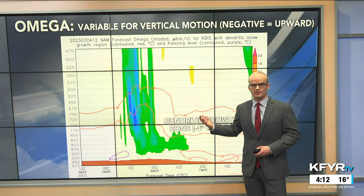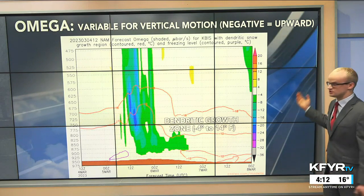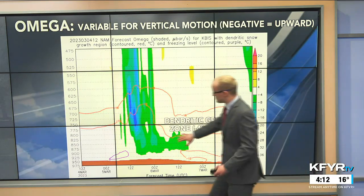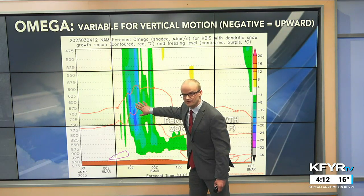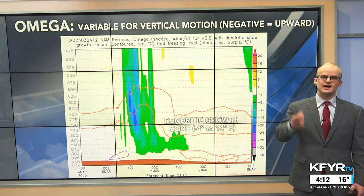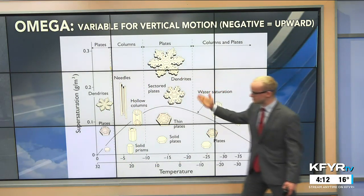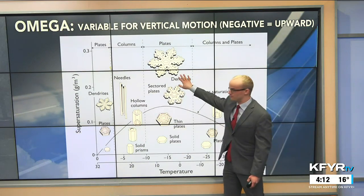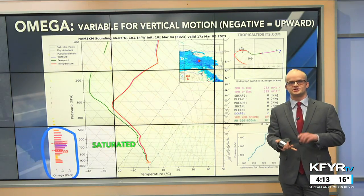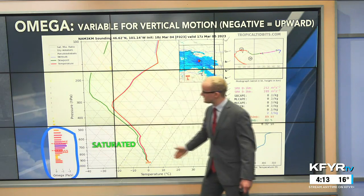Here's another model parameter called Omega, which we look at to determine how much vertical motion there is in the atmosphere. When Omega is negative, that means there's more vertical motion and more intense precipitation. Over this time scale, we had a lot of vertical motion leading to that intense precipitation. If that rising air occurs within a specific layer called the dendritic growth zone, it produces very large, fluffy snowflakes called dendrites. You need the right amount of saturation and the right temperature — along with strong vertical motion — for those well-formed snowflakes to develop, and that's exactly what we had on Sunday within that narrow heavy snow band.